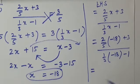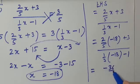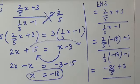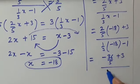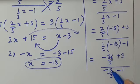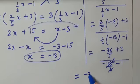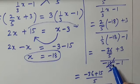Now we simplify. In the numerator: 2 upon 5 into minus 18 gives minus 36 upon 5, plus 3. In the denominator: 1 upon 3 into minus 18 gives minus 18 upon 3, minus 1. Taking 5 as LCM in the numerator, we get minus 36 plus 15 upon 5. In the denominator, minus 18 upon 3 simplifies to minus 6, so minus 6 minus 1 equals minus 7.